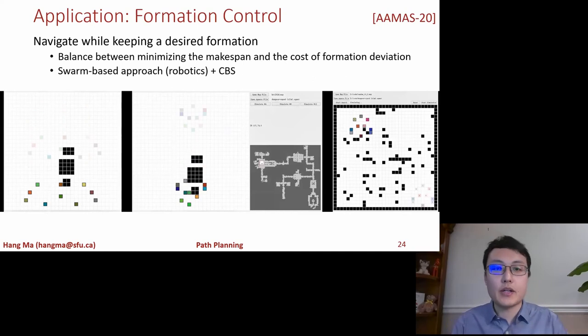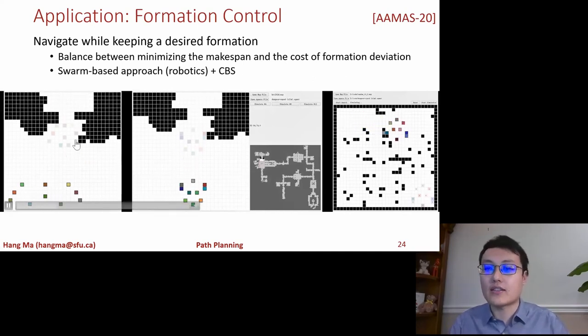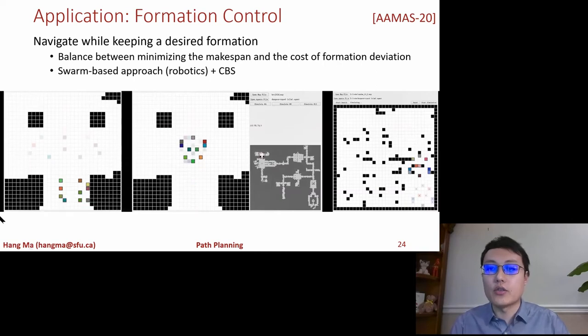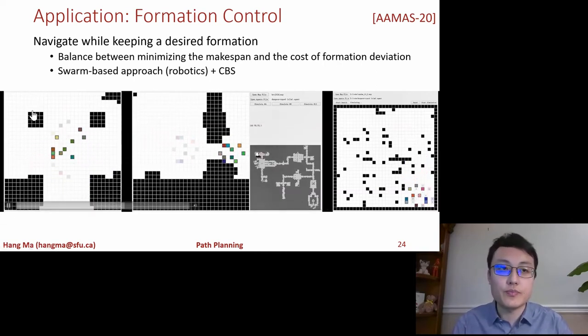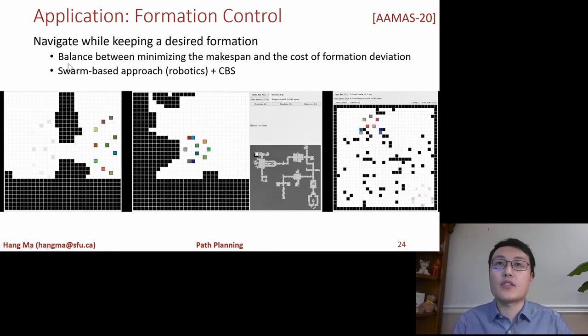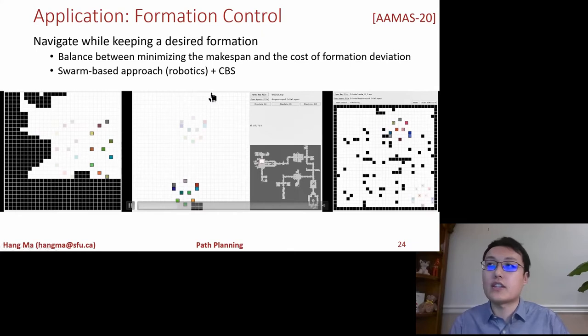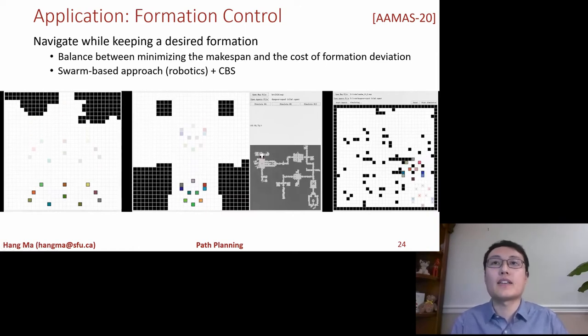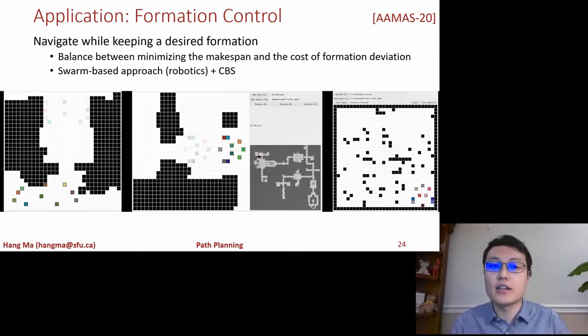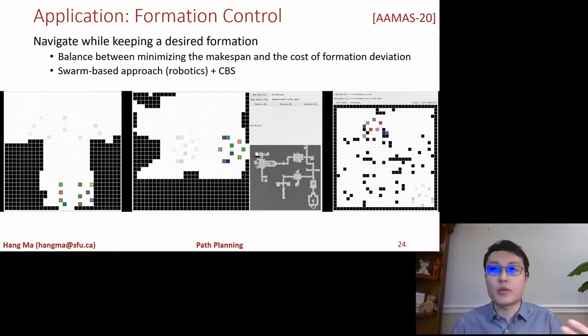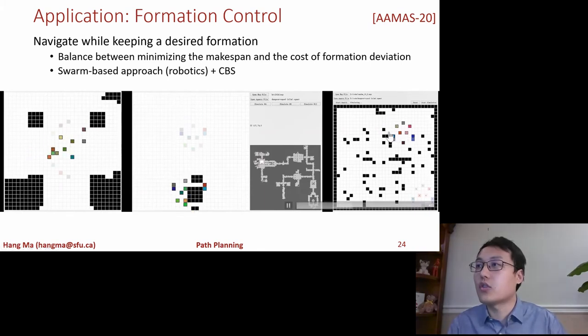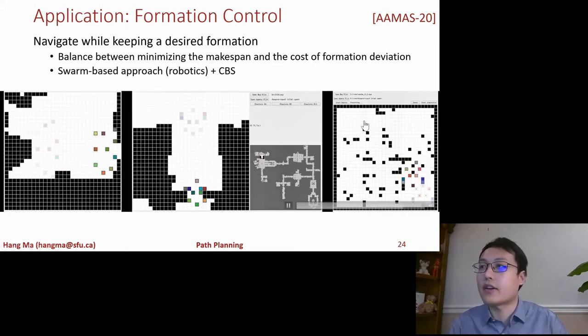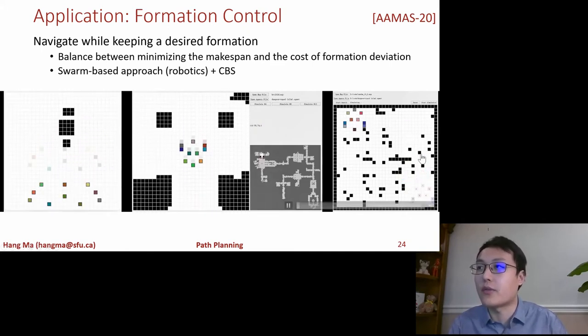The other application we have been looking at is multi-agent navigation tasks for robots and video game characters where the agents try to keep a desired formation. So here we are asked to balance between minimizing the makespan and the cost of deviating from the desired formation and we've contributed a new approach that combines swarm-based approaches from the robotics community, for example the leader-follower approach, and also CBS. So as shown in the demo the agents can keep the formation while they navigate through open spaces and also congested areas in the environment.